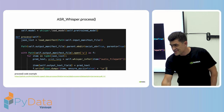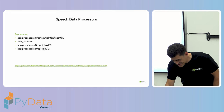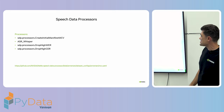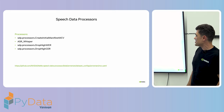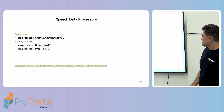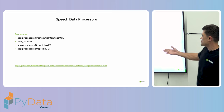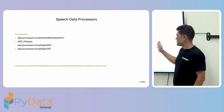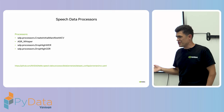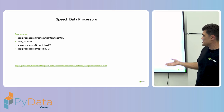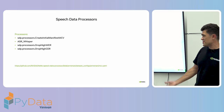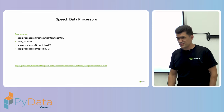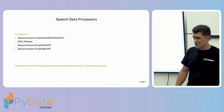That's basically what we can do with GPU support — it's quite simple. Then we just need to do post-processing with DropHighWER and DropHighCER. These are metrics for speech recognition — I won't go into detail today, but they are error metrics used to filter low-quality samples.